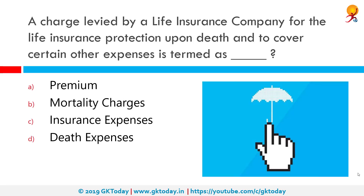A charge levied by a life insurance company for the life insurance protection upon death, and to cover certain other expenses, is termed as what? It's termed as mortality charges. When we buy a life insurance policy, the insurer levies a charge for the insurance protection upon death and to cover other aspects. This is known as the Mortality Charge, and it is the actual cost of insurance by the life insurance company.